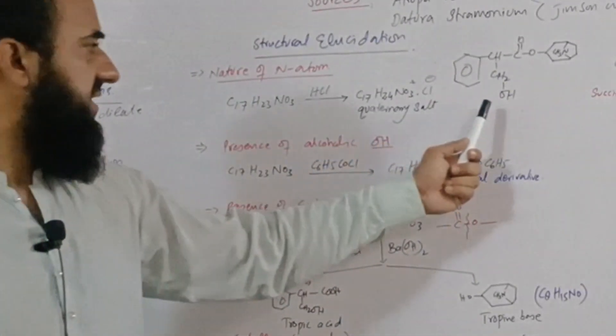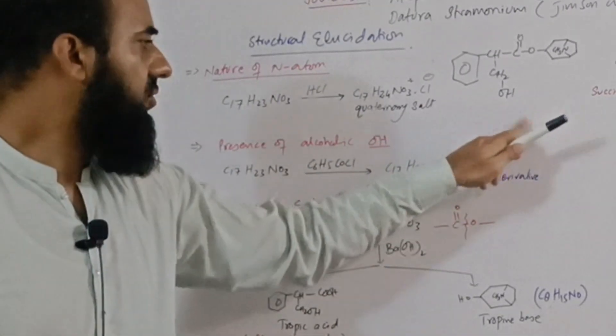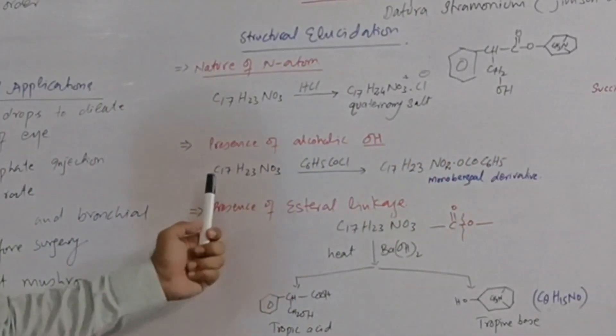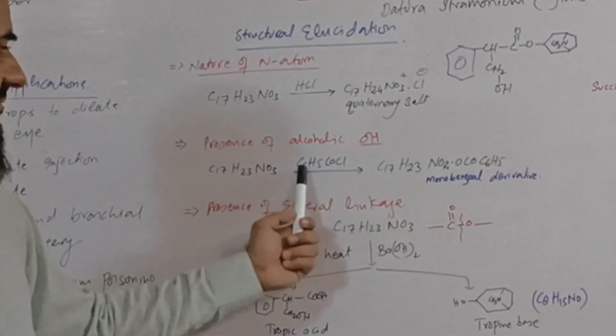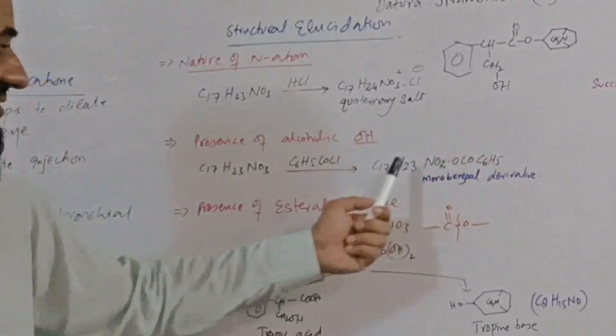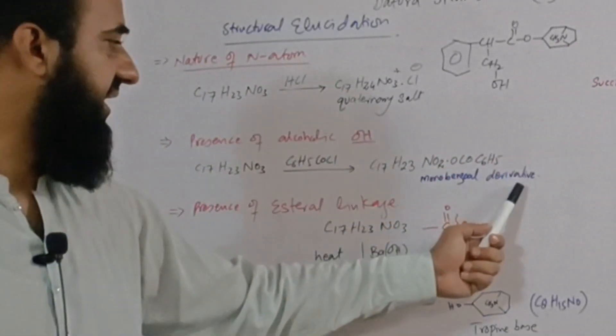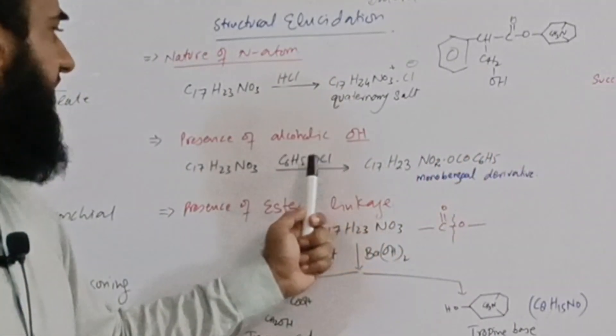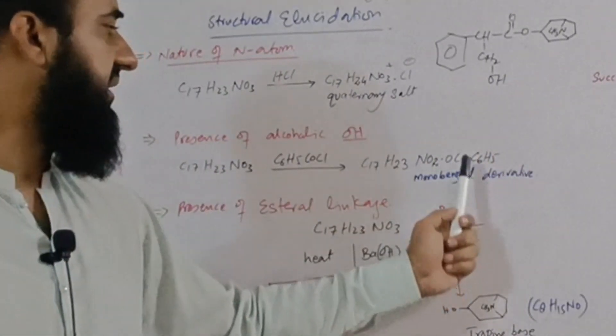The structure shows that there is hydroxyl. What are the evidences to prove this? When atropine is treated with benzoyl chloride, as there is only one hydroxyl group in the structure, a monobenzoyl derivative is obtained. This H is removed and the benzoylation takes place.